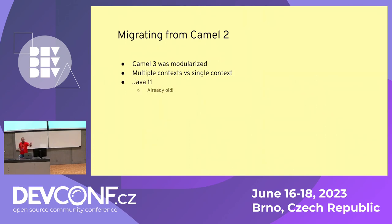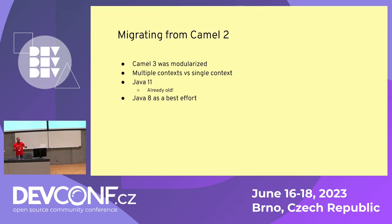If you are still on Camel 2, then that migration path is a little bit more problematic. Camel 3 was modularized, so the dependencies that Camel 2 provided are different than the ones provided by Camel 3. Migrating from Camel 2 involves adjusting those dependencies, package changes, and so on. There were also changes in handling multiple and single contexts, and Camel 3 brought Java 11 as a minimum version. So it's quite a lot more work than the migration from Camel 3.